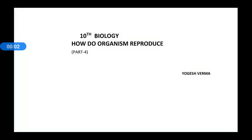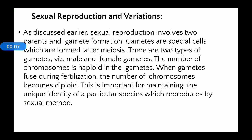Good morning students, today is the fourth part of the chapter 'How do Organisms Reproduce.' Let's start. The first topic is sexual reproduction and variation. What is sexual reproduction?